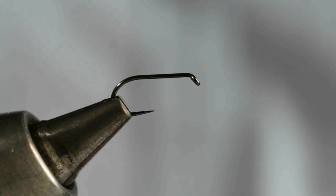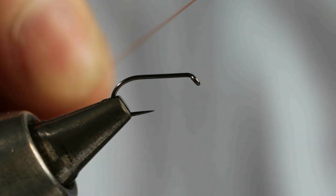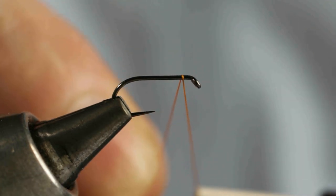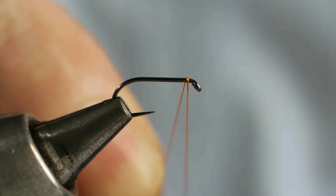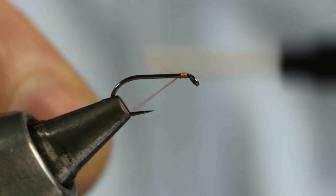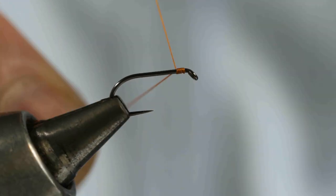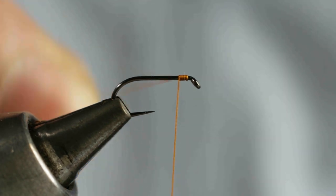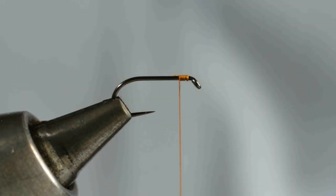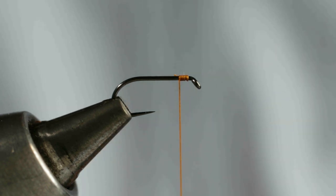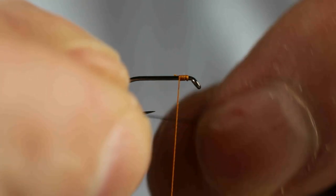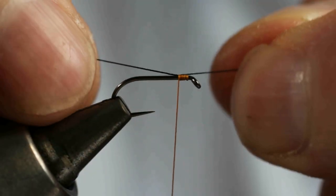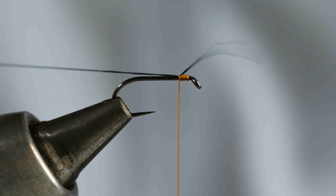So simply come in with your orange silk and start it about two silk wraps behind the eye of the hook. Catch your thread with three or four tight turns of silk before trimming off the waste. And now to get a nice even body what we've got to do is we've got to mount in our rib straight away so we don't get any bumps at the back end of the fly when we mount the rib in as we would do if you mounted it in the back. So we're going to put it in at the front here.